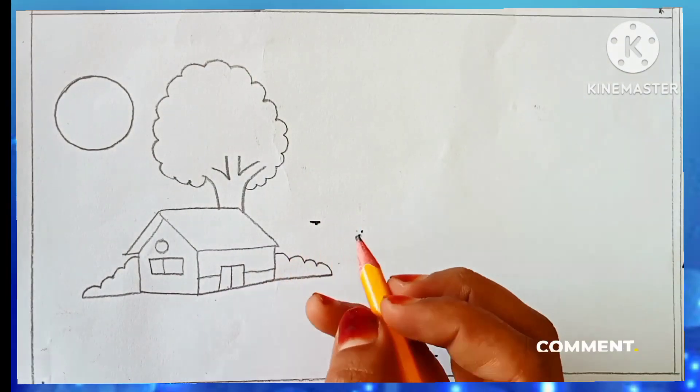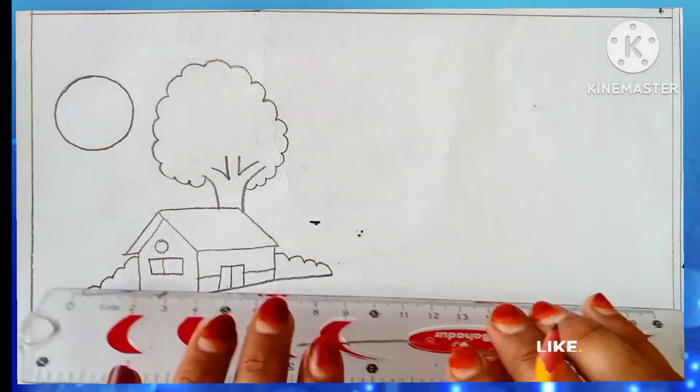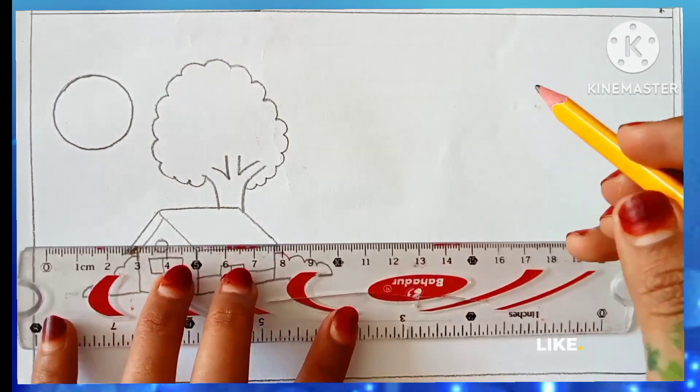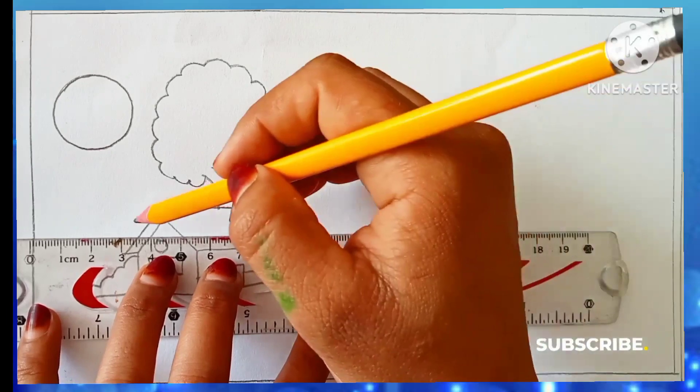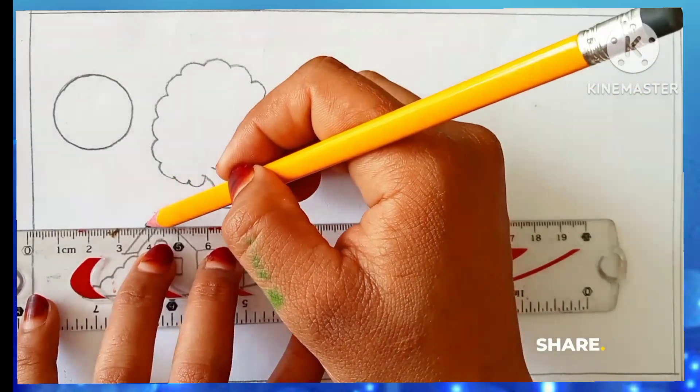Okay, so we'll draw a sun at the left side of the tree. Using the scale, now we will draw the background borderline back of the house.